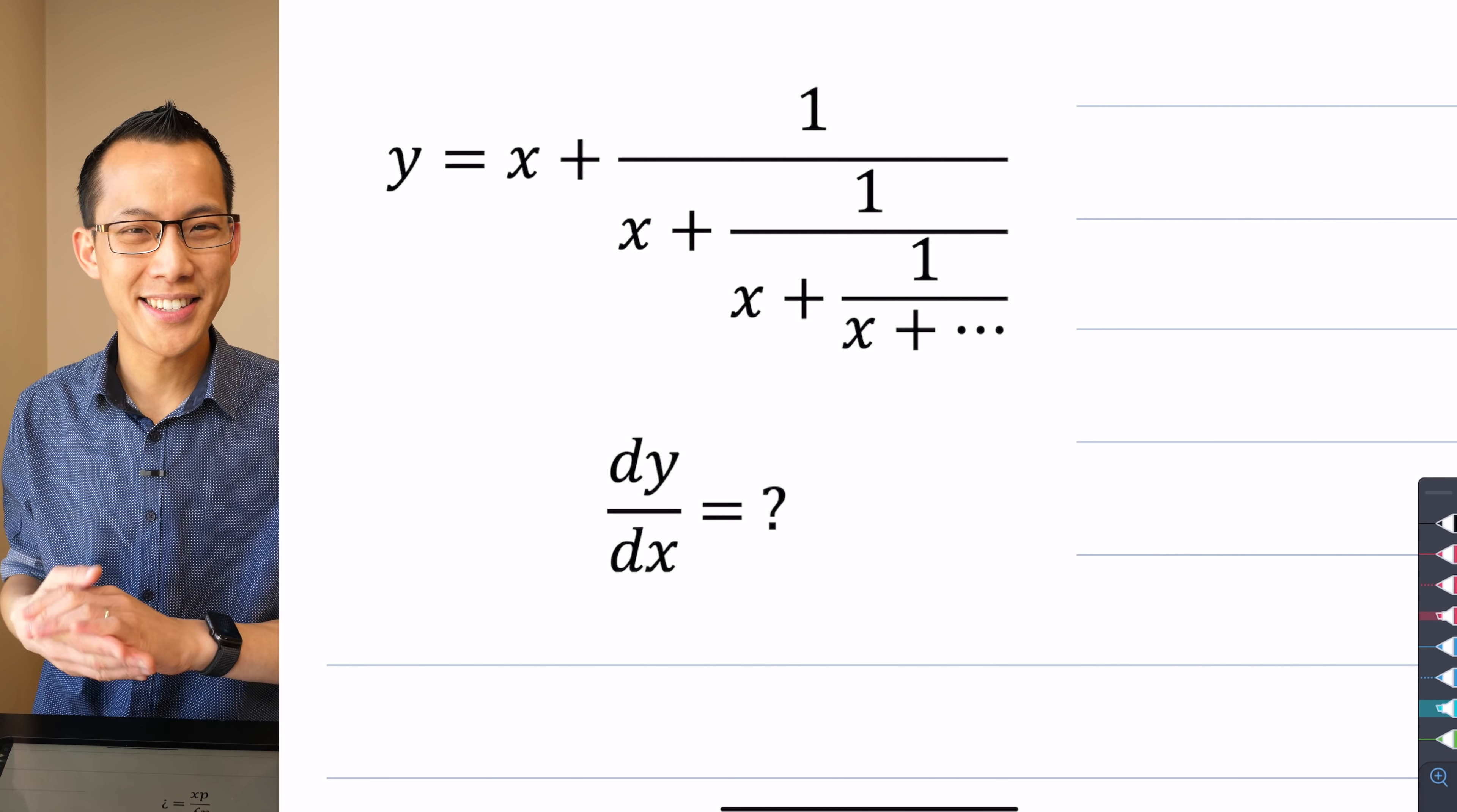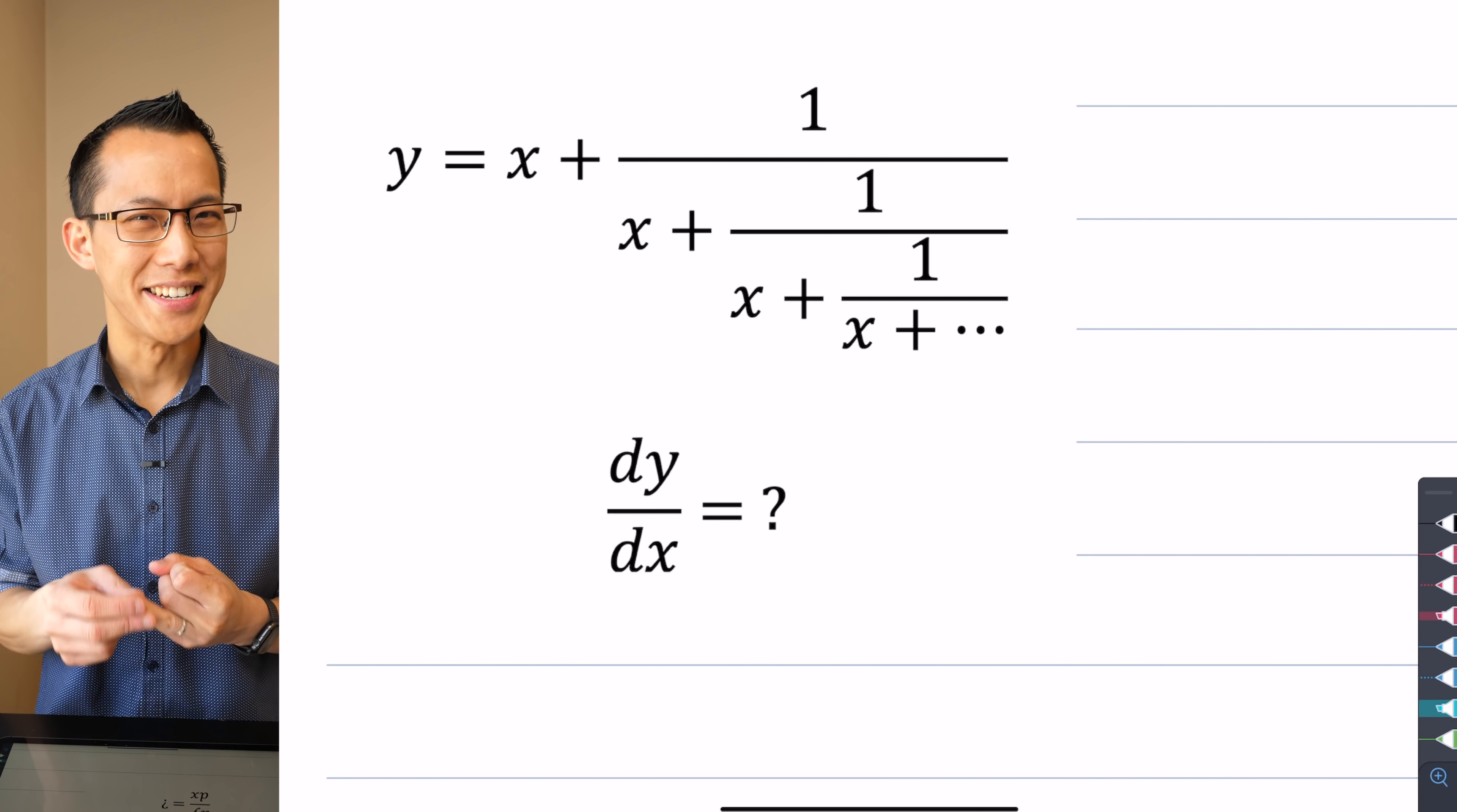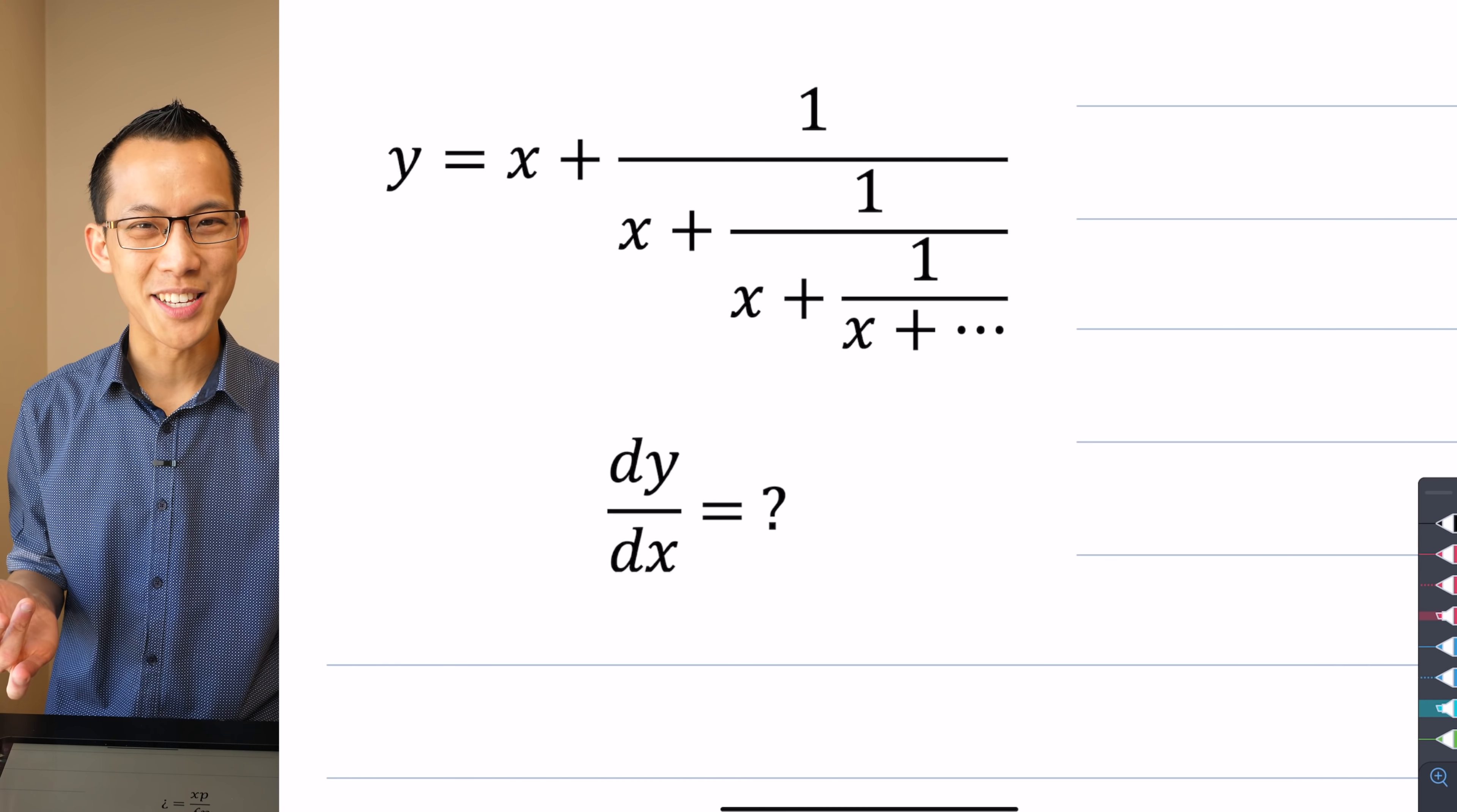So this special beast here, this is called a continued fraction, by the way. Super interesting object that is worth investigating all on its own. There's a whole area of maths to do with continued fractions and how you can express weird and wonderful things like irrational and transcendental numbers with continued fractions if you pick your continued fraction carefully.